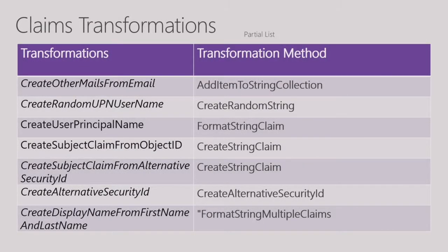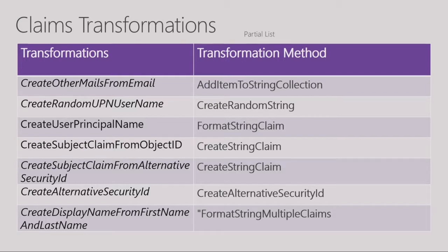These are some examples of claims transformations declared in the starter pack. One example is 'create other mails from email'. Other mails is a property in the AD Graph API — it's a directory property that is a collection of email addresses belonging to a user. The 'add item to string collection' transformation method is invoked, providing the email address and the collection it needs to be added to. Once invoked, it does the manipulation and returns the collection back. Using this, you can get one email address from Facebook, ask the user for another, create a collection, and put it in the directory.